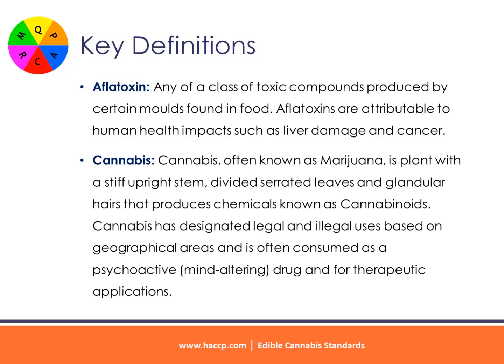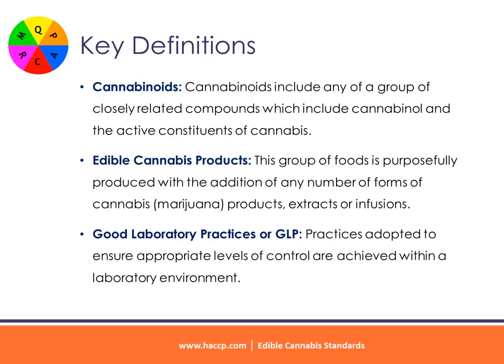Cannabis: often known as marijuana, is a plant with a stiff upright stem, divided serrated leaves, and glandular hairs that produces chemicals known as cannabinoids. Cannabis has designated legal and illegal uses based on geographical areas and is often consumed as a psychoactive, mind-altering drug and for therapeutic applications.